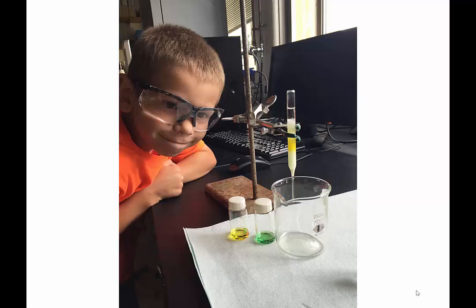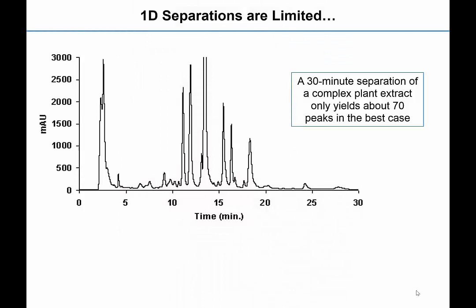Modern liquid chromatography is done with high-pressure pumps and this enables us to separate more compounds at one time, but the separating ability of a single column is limited, as is illustrated by this separation of the components of a complex plant extract. We only see about 70 peaks in this chromatogram even though we know there are thousands of types of molecules present in the mixture.